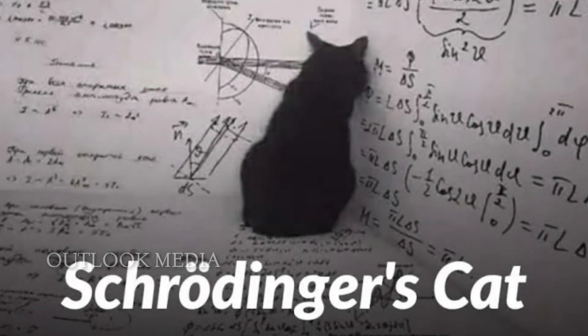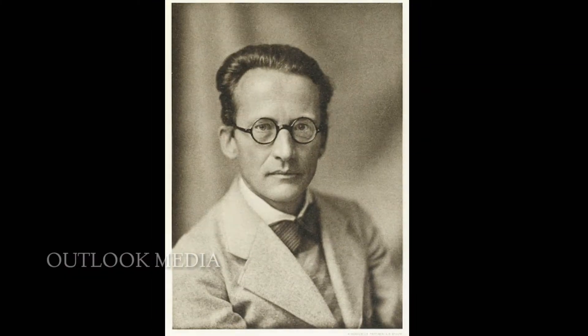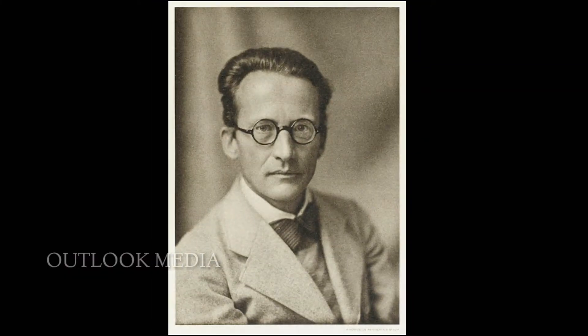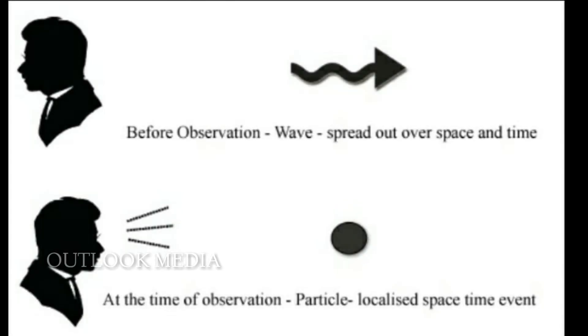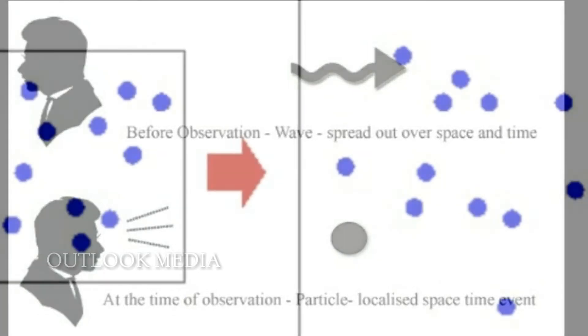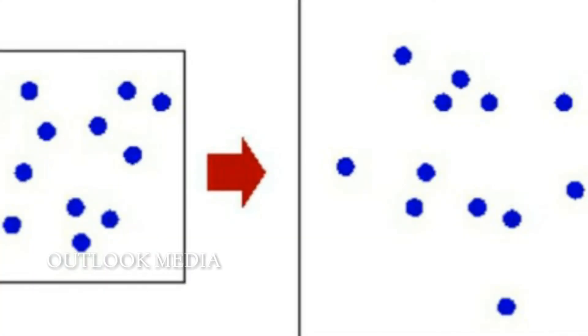What is Schrödinger? Erwin Schrödinger proposed a thought experiment. He said that a particle can be observed as a particle, and it is possible that all states exist simultaneously — that is, the particle is in a superposition.